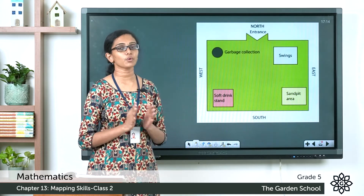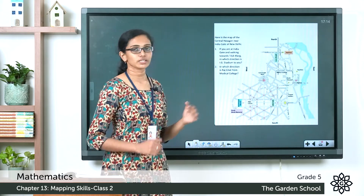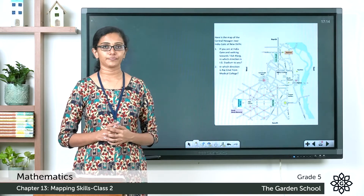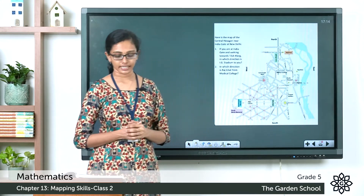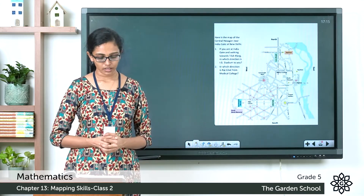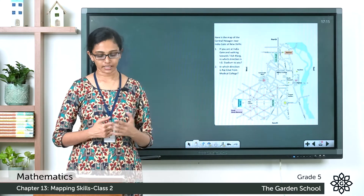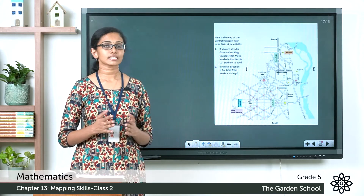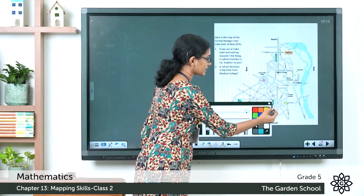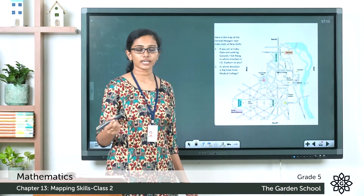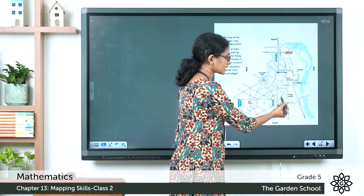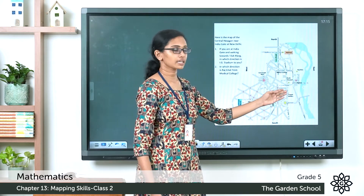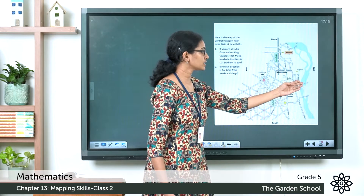Now let's make this more clear with one more example. In the same page you can see a map of the central hexagon near India Gate at New Delhi. We can see the central hexagon here near India Gate. There are a few questions given below. If you are at India Gate and walking towards Tilakmark, in which direction is IG Stadium to you? Have a close look at the map. You have India Gate here and Tilakmark is this road, and IG Stadium is here.